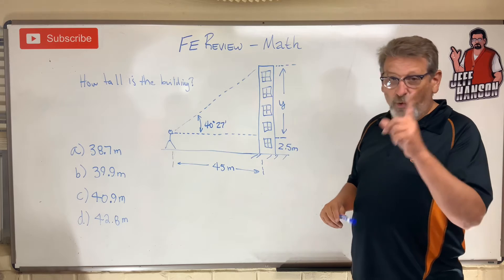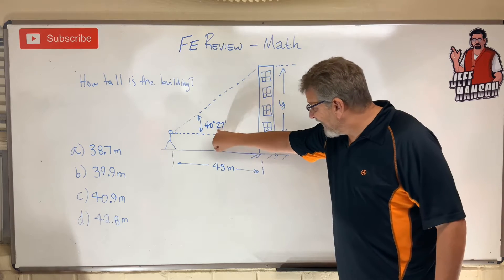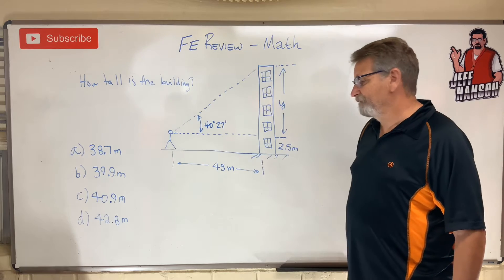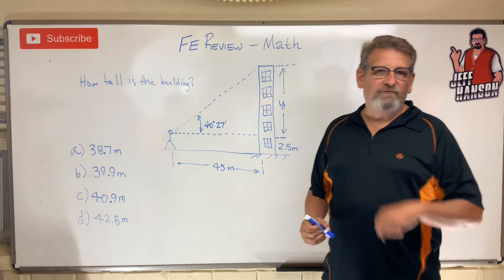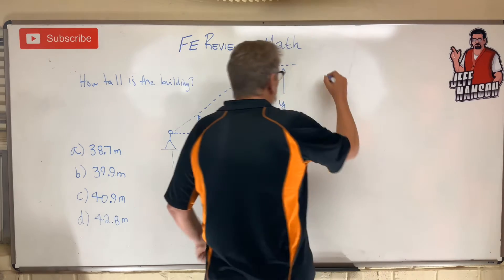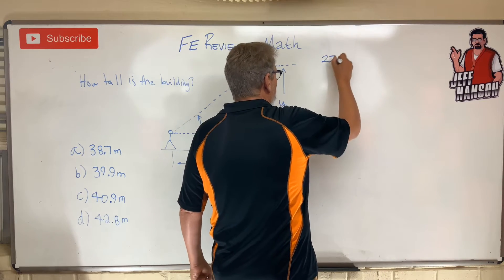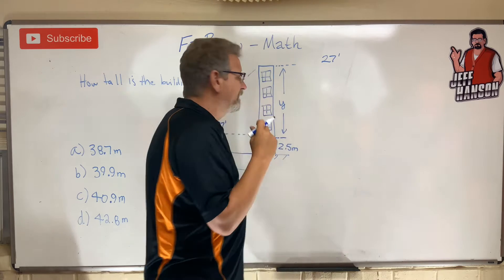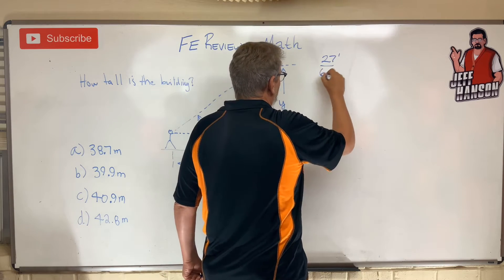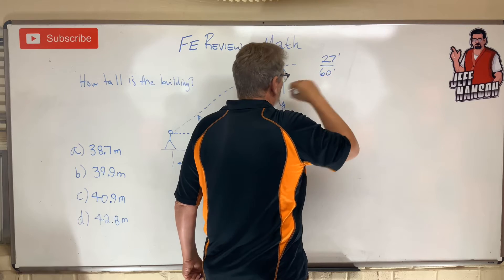Let's see how to do it. Step one: what is 40 degrees 27 minutes? Number one, I want to convert that into just a regular decimal degree that I can work with on my calculator. So what is 27 minutes? There are 60 minutes in an hour, right?